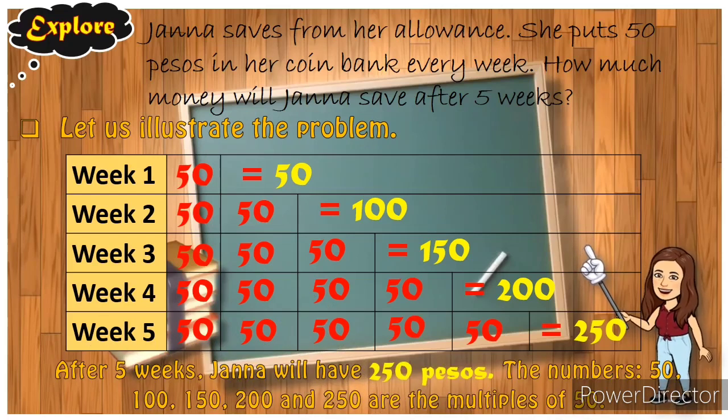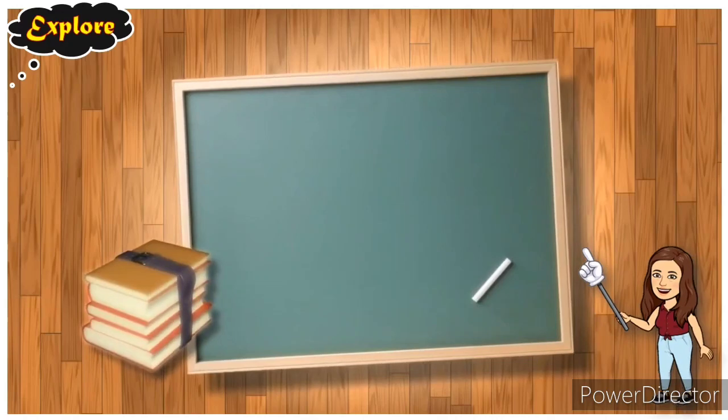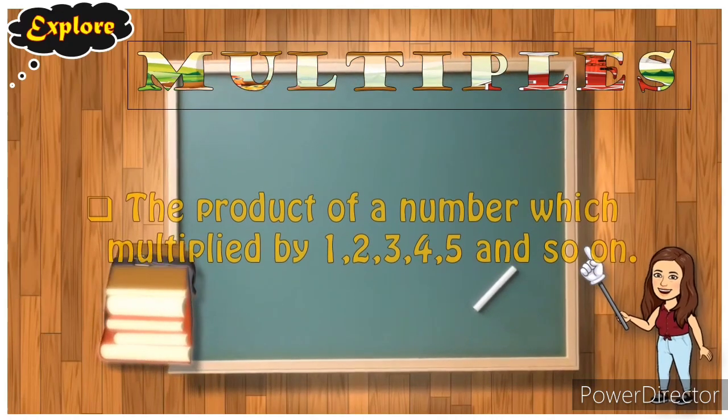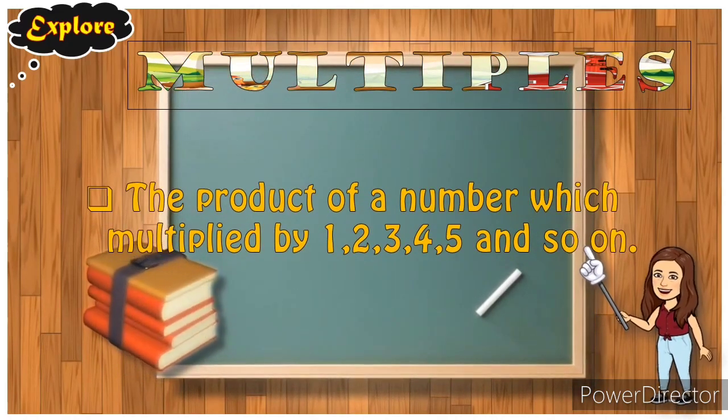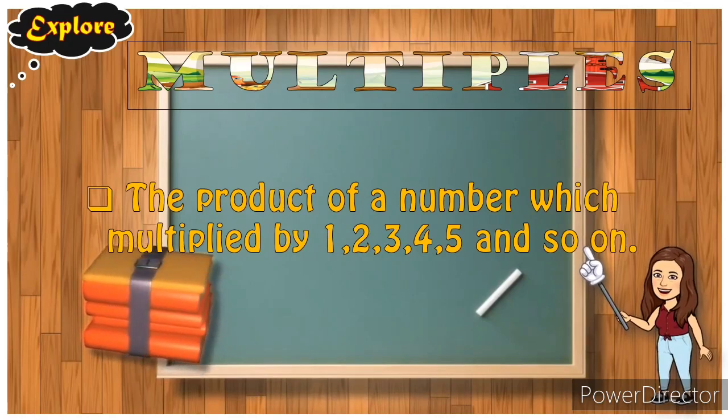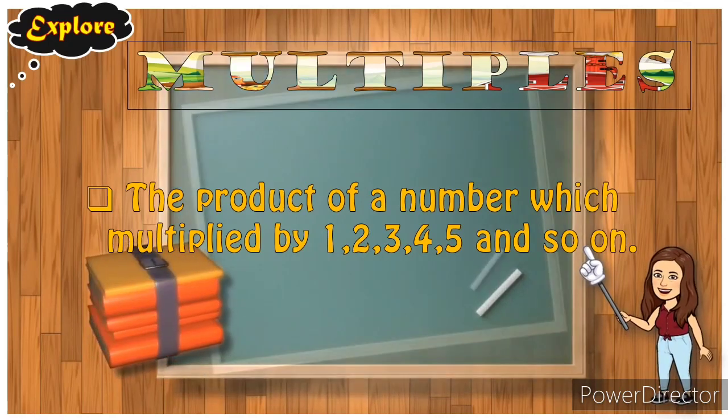After five weeks, Jana will have 250 pesos. The numbers 50, 100, 150, 200, and 250 are the multiples of 50. Teacher, what is multiples? Multiples, we'll find out later. Multiples are the product of a number which is multiplied by one, two, three, four, five, and so on.